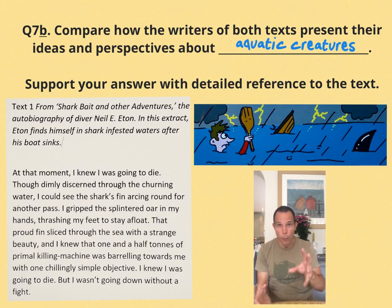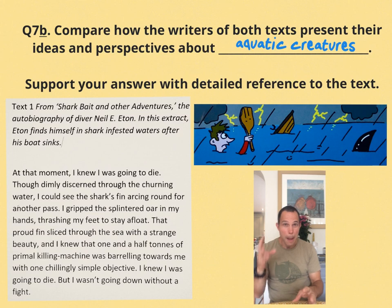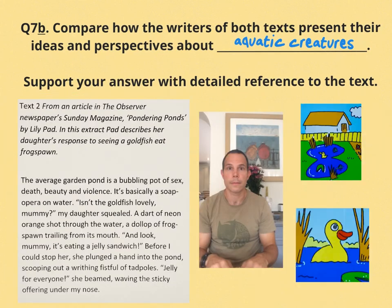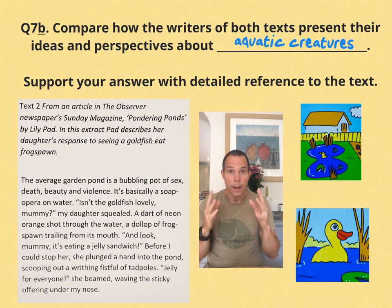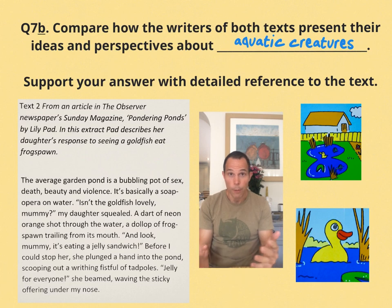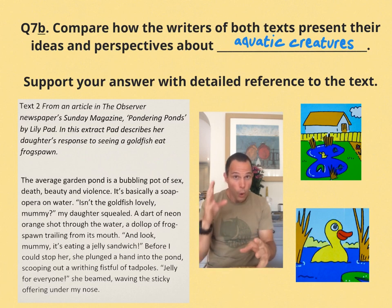Text One is an extract about a bloke fighting for his life against a big bone-crunching shark — jaws against oars.